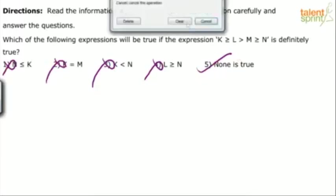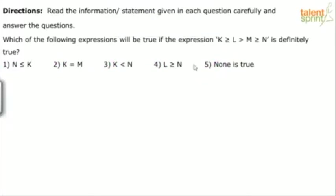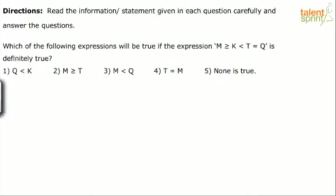Simple questions — like a cakewalk. Which of the following expressions will be true if this is definitely true? Similar format. Q less than K? No — Q will be greater than K. T is greater than K and T is equal to Q, so Q greater than K. First one is wrong.